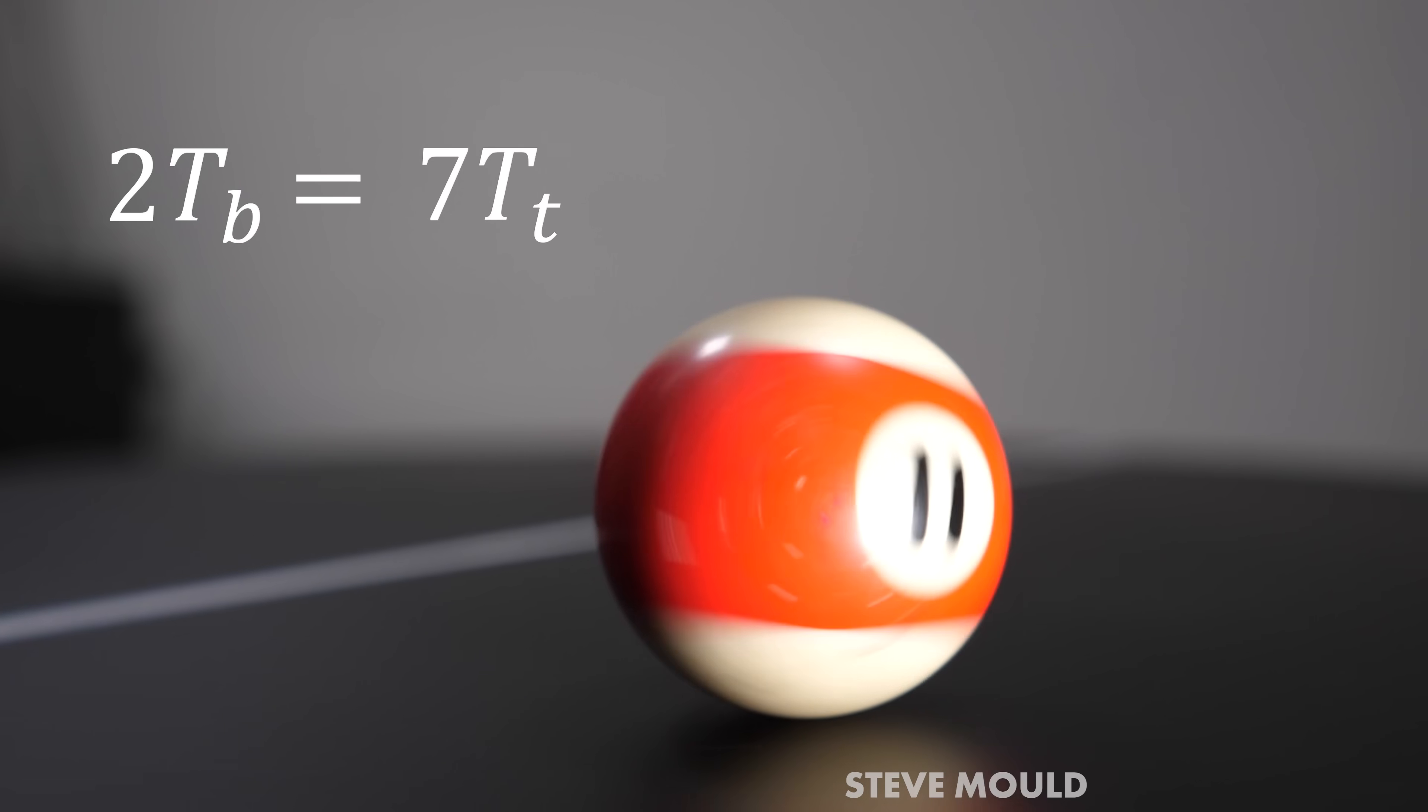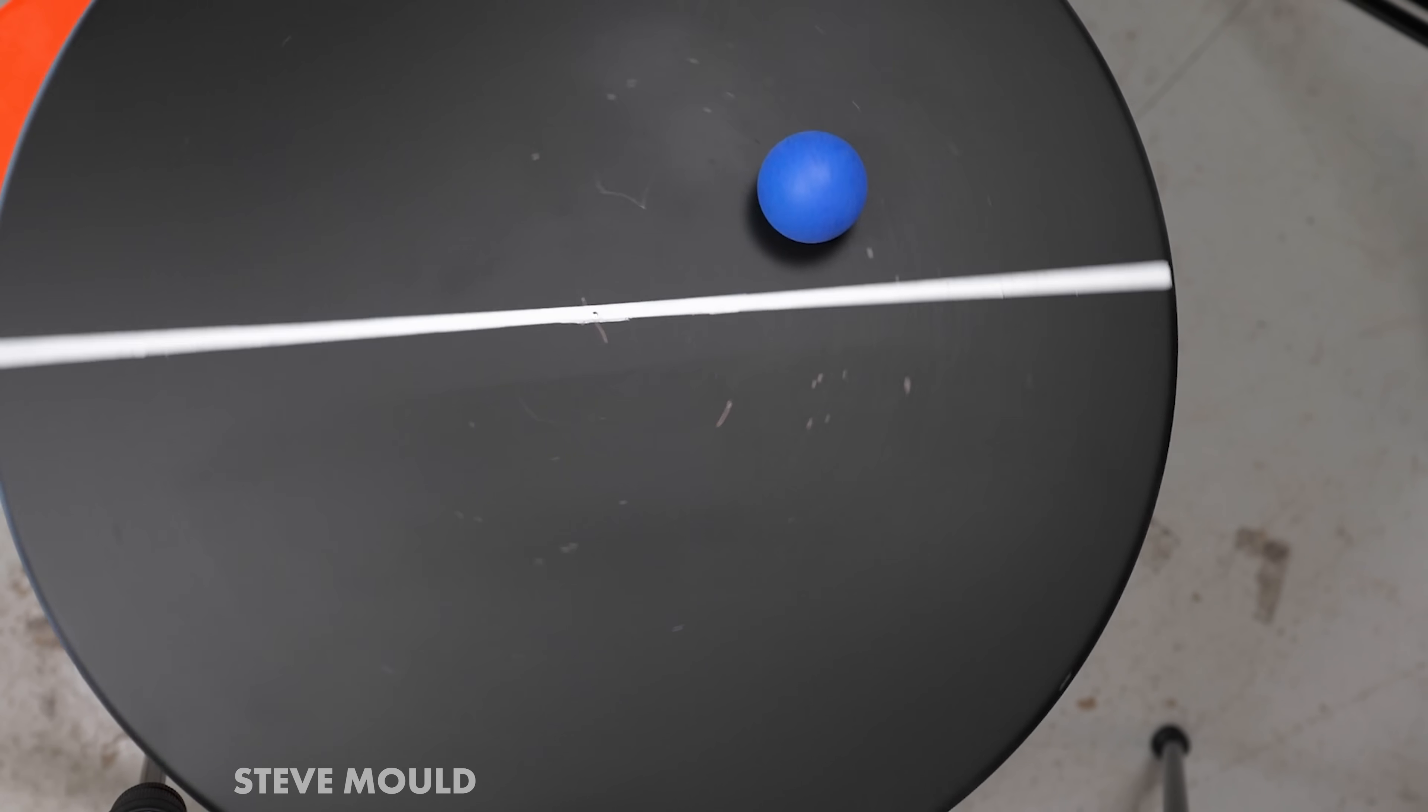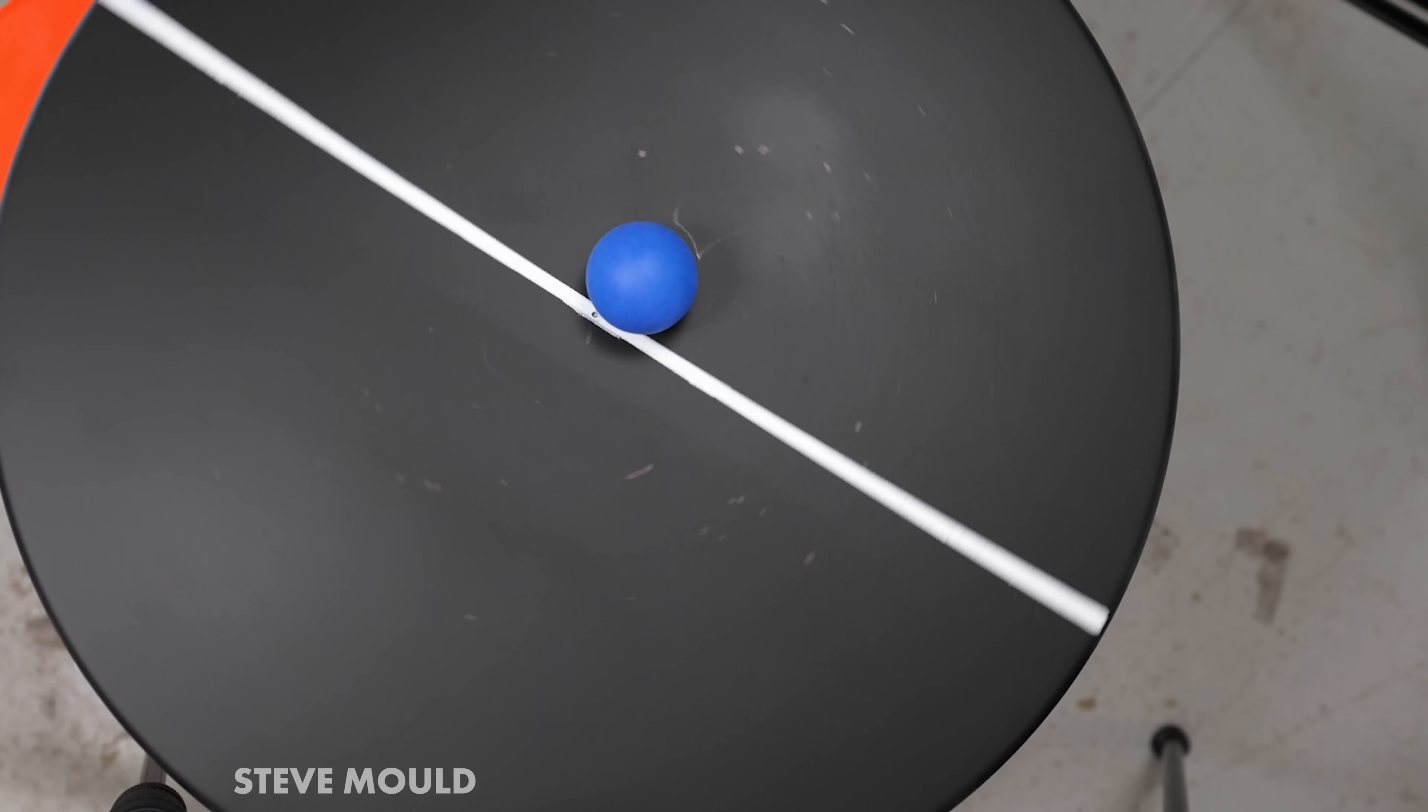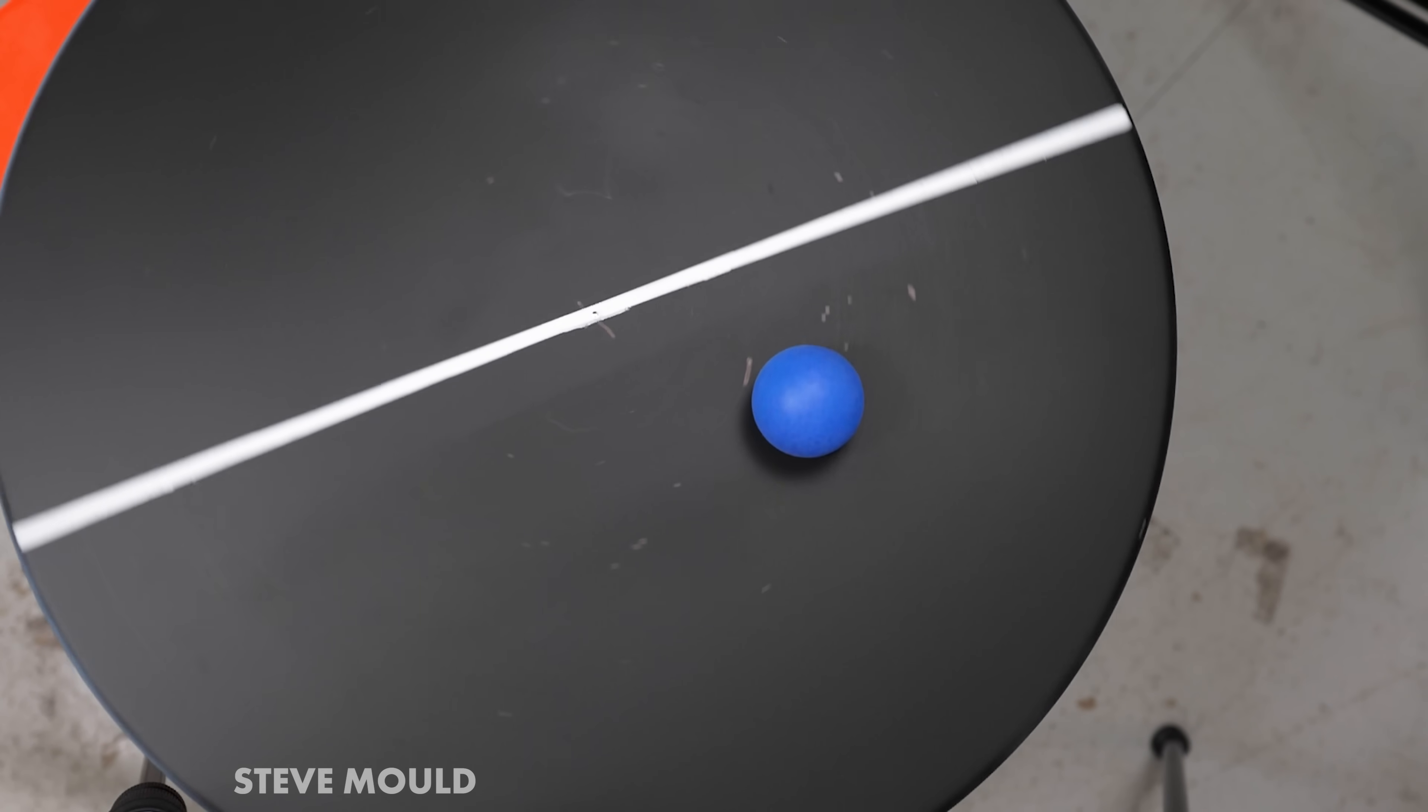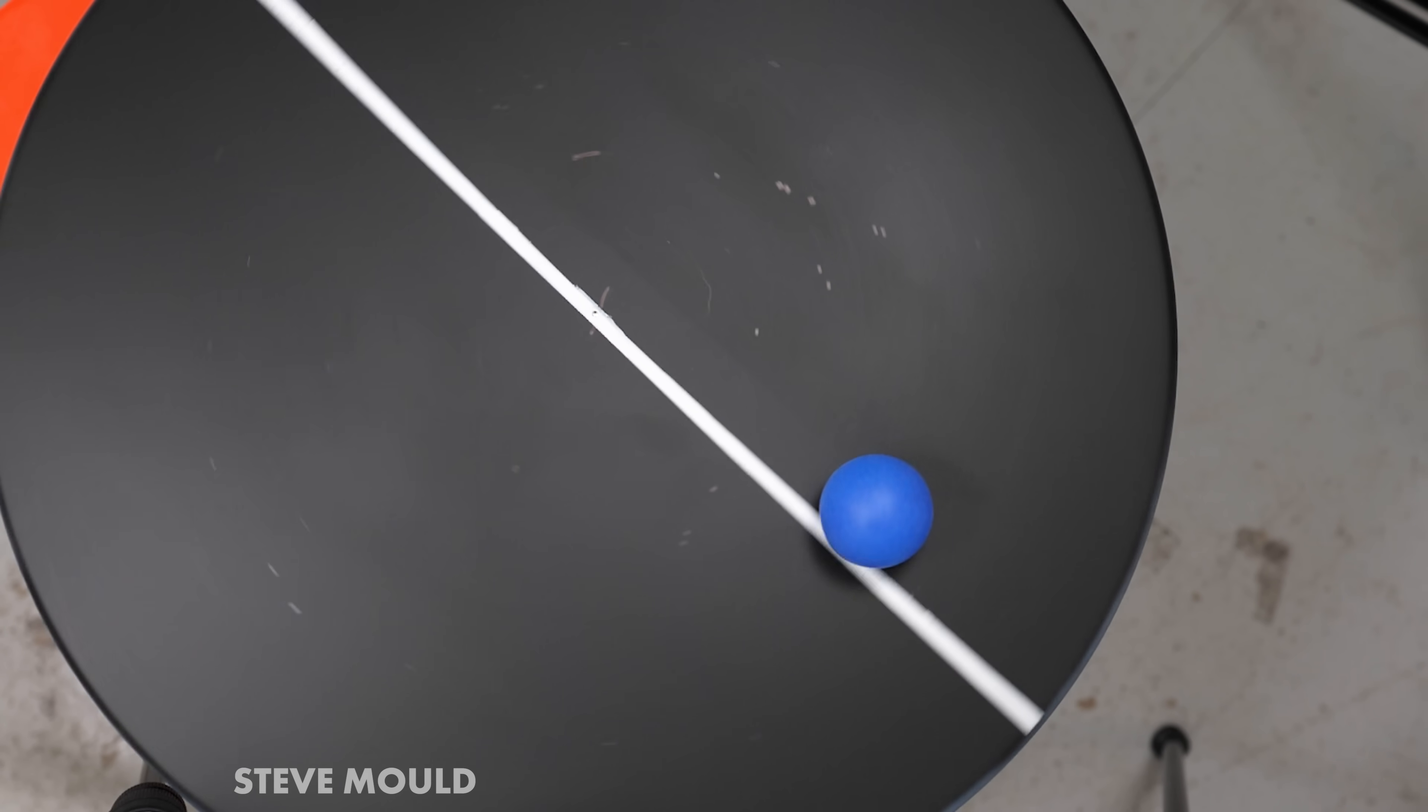The reason it's different for a hollow ball is because the moment of inertia calculation for a hollow ball is different because all the mass is on the outside. The integration is different and you end up with a ratio of five to two instead.